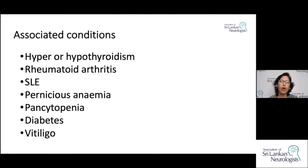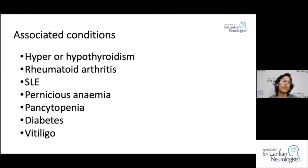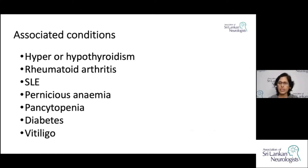As an autoimmune condition, many other autoimmune conditions could be associated with Myasthenia Gravis. You need to be vigilant not to miss these. More often you see hyperthyroidism, so check thyroid functions routinely. Rheumatoid arthritis, SLE, diabetes, and vitiligo are other common associations seen in clinical practice.